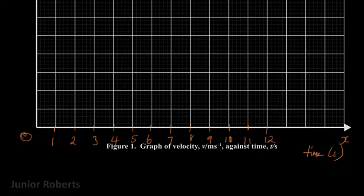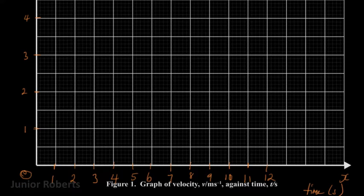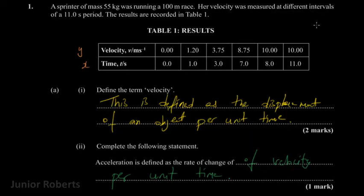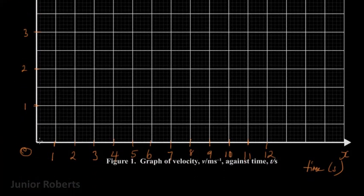On my y-axis I will be choosing a scale of two centimeters to one meter per second. Now that I have my axes labeled I can go ahead and fill in my values. When time is zero, velocity is zero, so my first point corresponds to the origin.